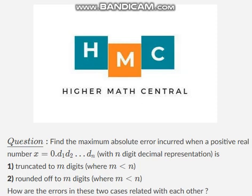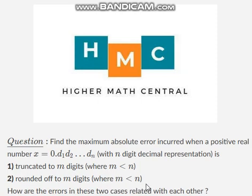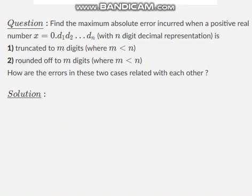Hello friends, welcome to Higher Math Central. Today we are going to discuss another question on numerical analysis. The statement of the question is: Find the maximum absolute error incurred when a positive real number x, expressed in n-digit decimal representation, is truncated to m digits where m is less than n, and in the second case when it is rounded off to m digits where m is less than n. We also have to find the relation between the two errors. Let us see the solution.